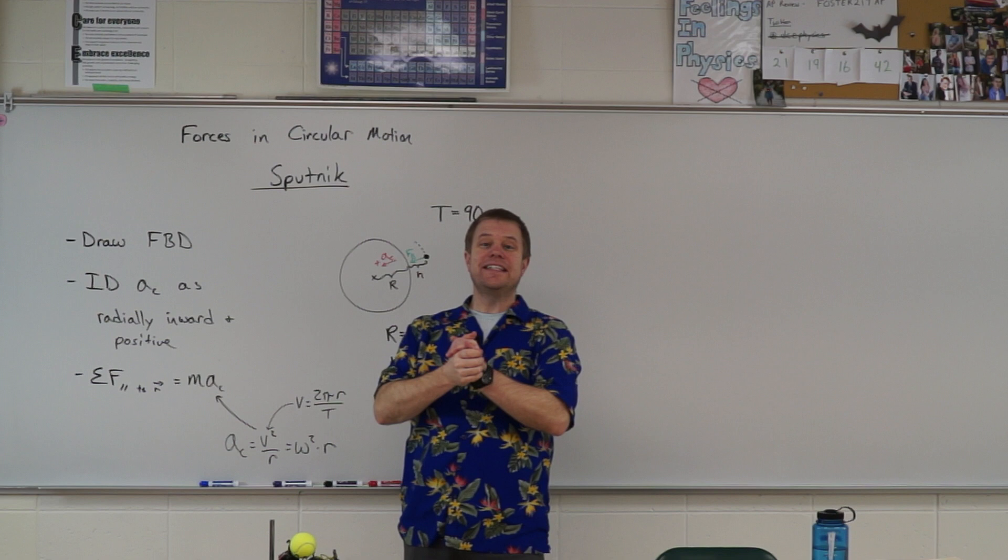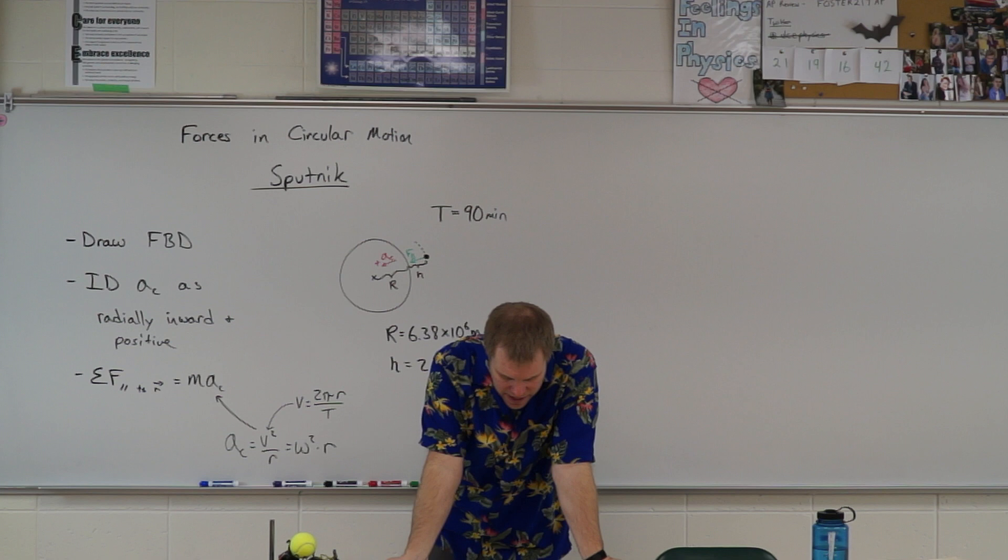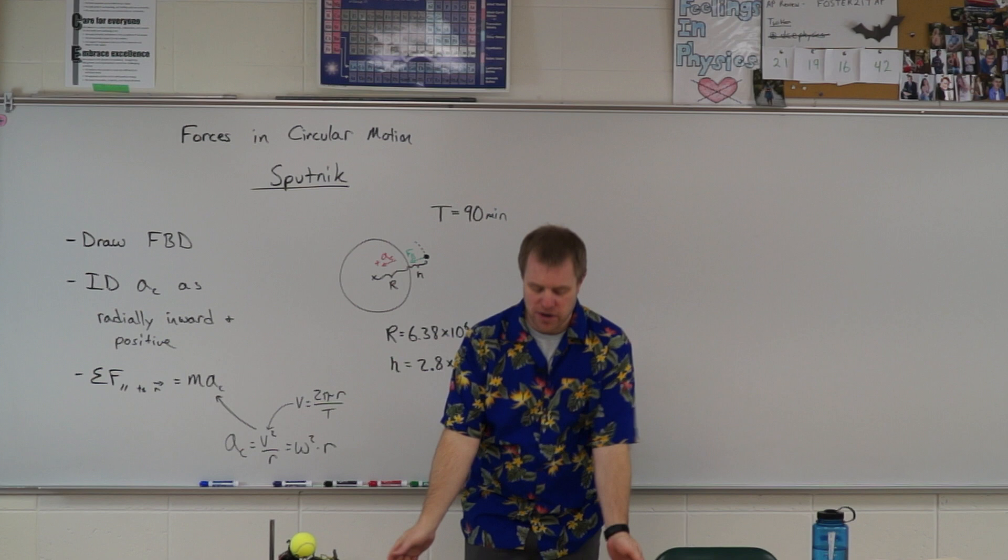All right, so we're going to do an example with Sputnik here, the first satellite in orbit around the Earth. So it says Sputnik circled the Earth once every 90 minutes, so they just gave us the period there, at an altitude of 2.8 times 10 to the 5th meters. That's about 174 miles, about the distance from Wausau to St. Paul. So it isn't terribly high off the surface of the Earth when you think about the size of the Earth itself.